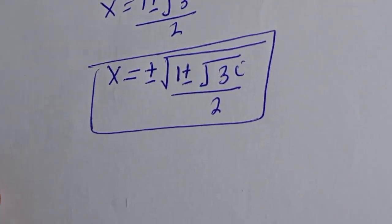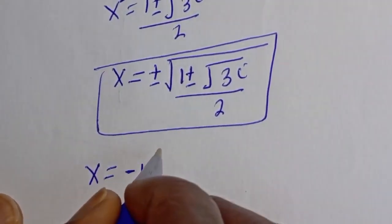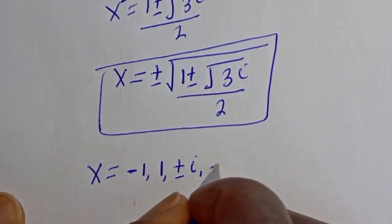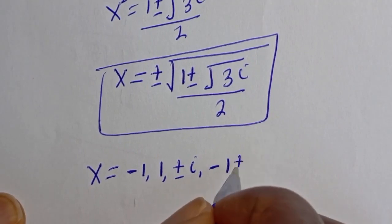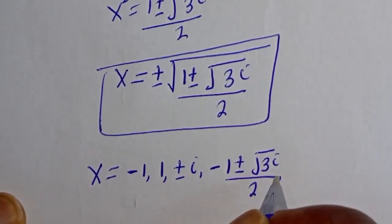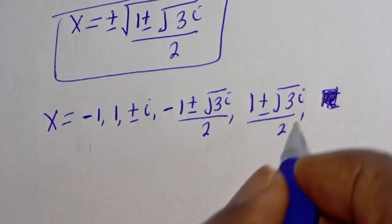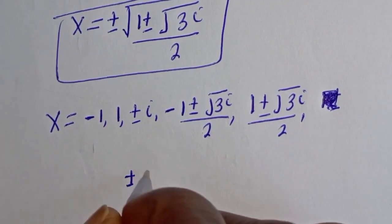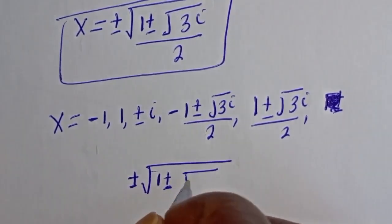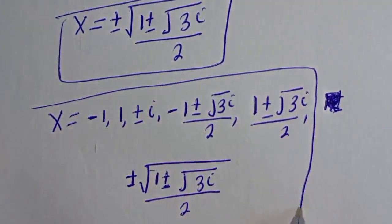Therefore, the complete set of values of s includes: s equals 1, s equals minus 1, s equals plus or minus i, s equals minus 1 plus or minus root 3i over 2, and s equals 1 plus or minus root 3i over 2. So this is the final answer.